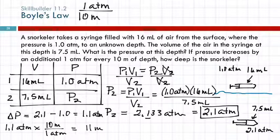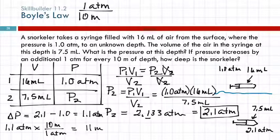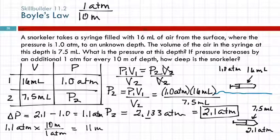You need to be able to do the first part of the problem; you don't have to do the last part. You could actually make your own depth measurement device using just a syringe full of air — measure the volume at the surface, take it down, look at the volume at depth, and do a calculation like this to find out how deep you are. Of course, you could also use a ruler, but this would be more fun.